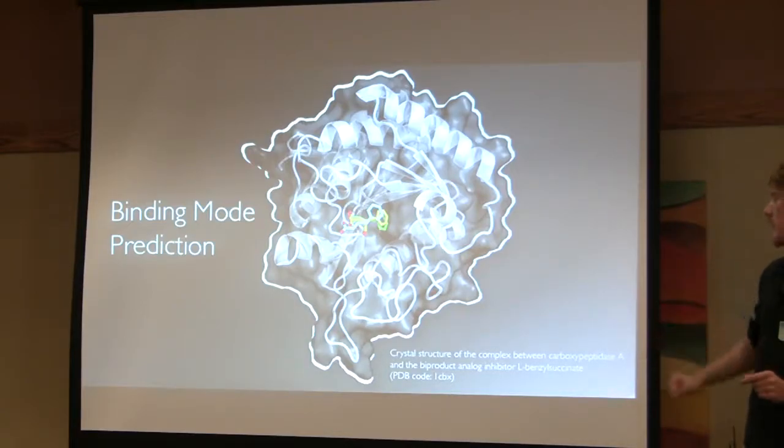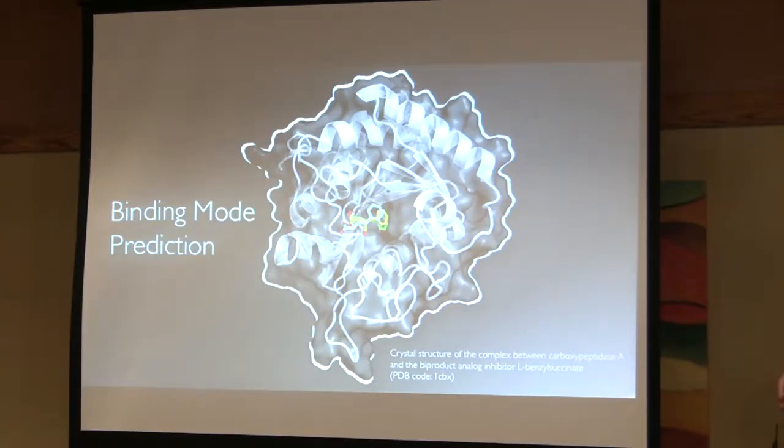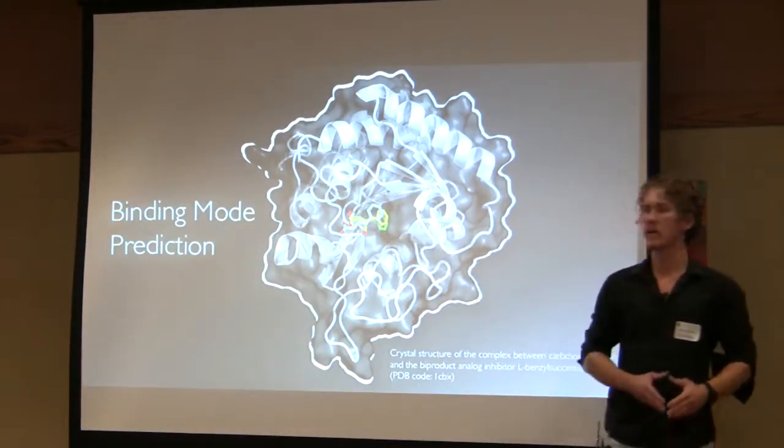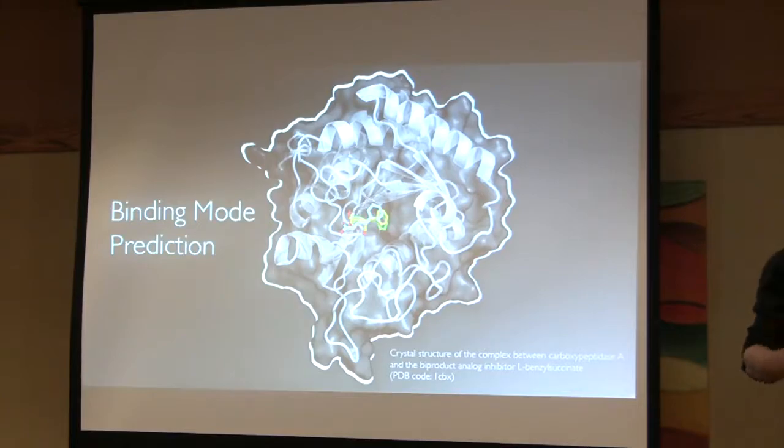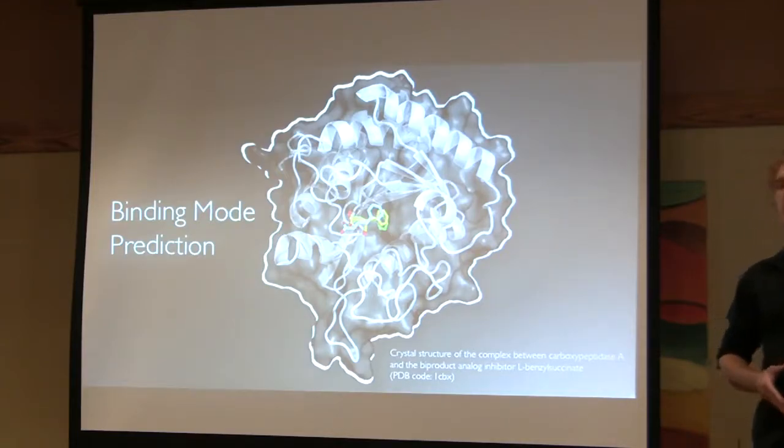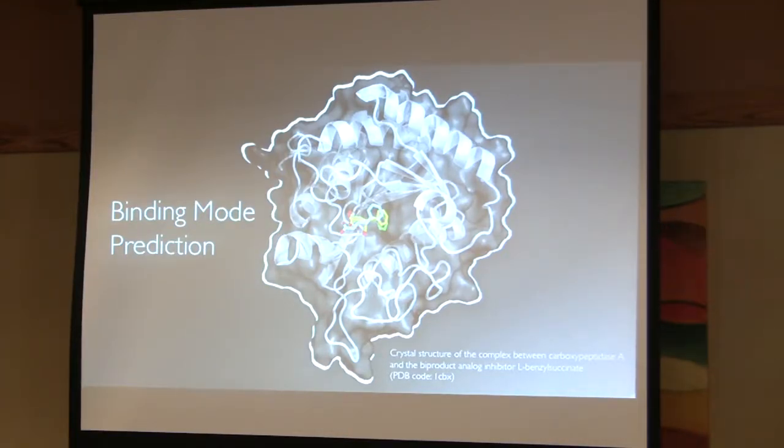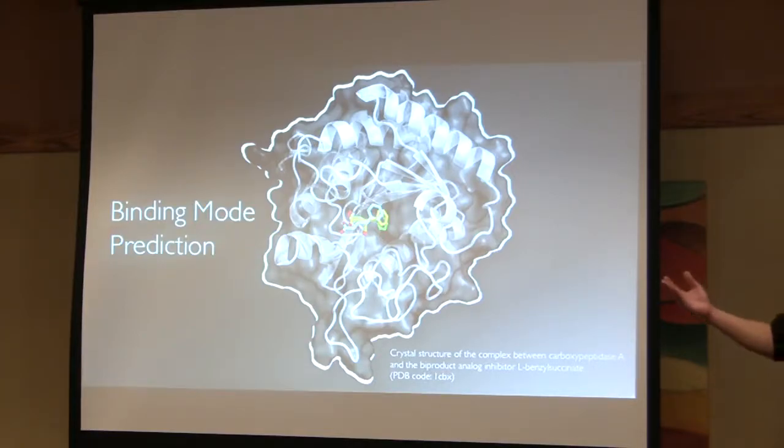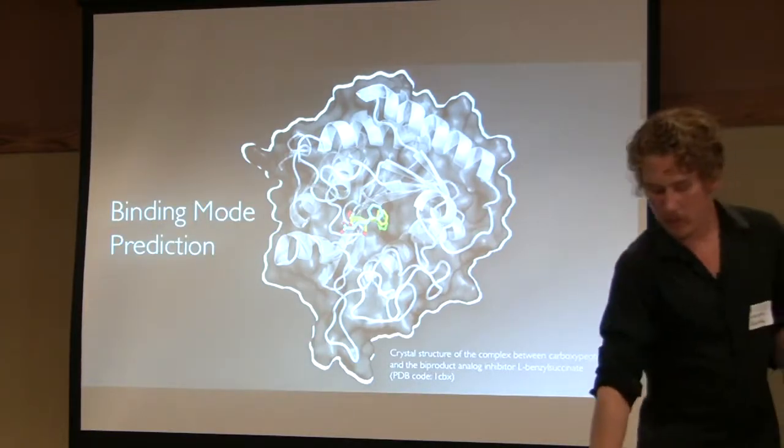I'm showing you an example of the crystal structure of carboxypeptidase A with a bi-product analog inhibitor, L-benzylsuccinate bound to it. In green, that's the crystal structure pulled from PDB, the Protein Databank. In blue and yellow, I'm showing you two exemplary docking poses. If you use a computational approach, you could sample docking poses that look like this. But how do we know if we don't know what the crystal structure looks like? How do we know what's better, the blue one or the yellow one? Are we close? Is our prediction a good prediction?